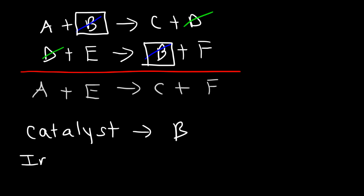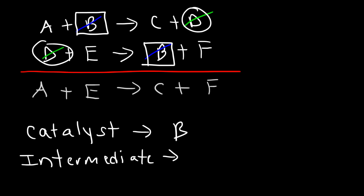The intermediate is the other species that was canceled. The intermediate appears on the right side first and then shows up on the left side later, so D is the intermediate. It's produced first and then it's consumed later. The intermediate doesn't show up at the beginning or at the end of the reaction — it's somewhere in the middle, so you really don't see it.